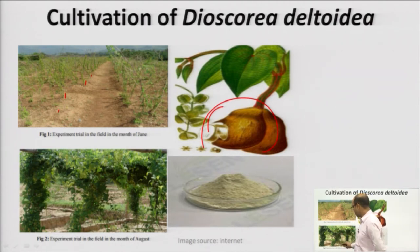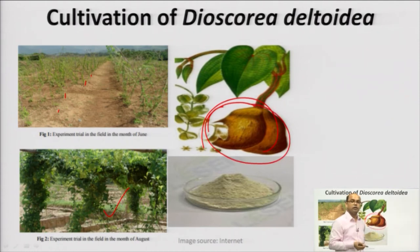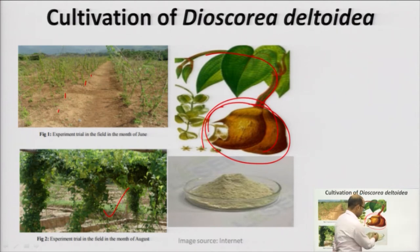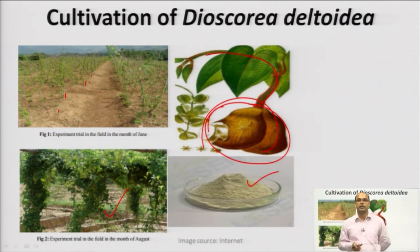These are the cultivated fields of Dioscorea plantation. The tuberous part of the plant is what we utilize for isolation of the diosgenin phytoconstituent, while the aerial part is generally not required, although research is now being conducted on isolation of phytoconstituents from aerial parts as well. This is the dried powder of our phytoconstituent diosgenin.